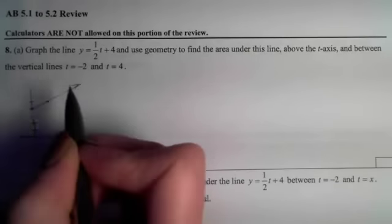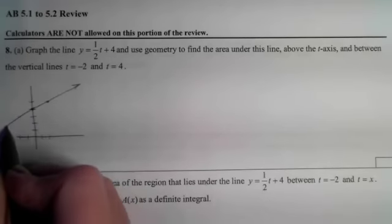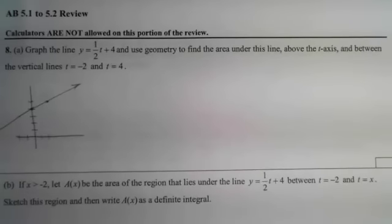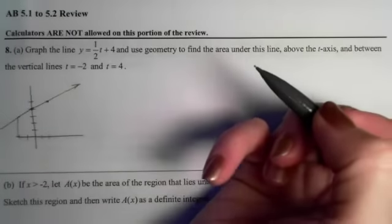Looks like you get a picture that looks something like this. Then I want to use geometry to find the area under this line above the t-axis between the vertical lines t equals negative 2 and t equals 4.